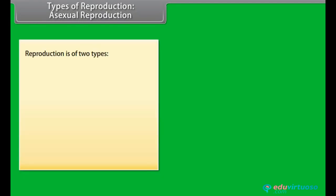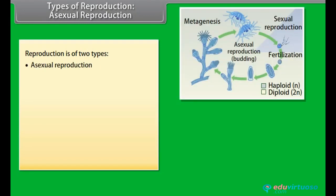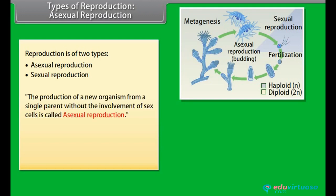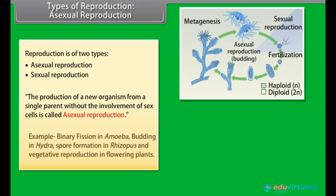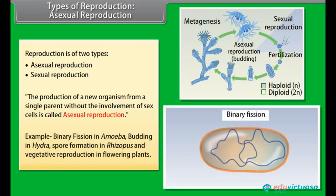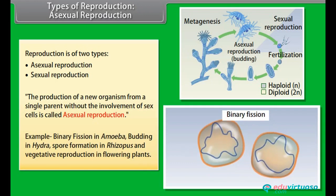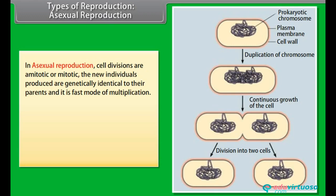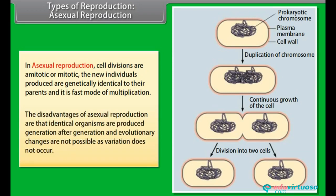Reproduction is of two types: asexual reproduction and sexual reproduction. The production of a new organism from a single parent without the involvement of sex cells is called asexual reproduction. Examples include binary fission in amoeba, budding in hydra, spore formation in rhizopus, and vegetative reproduction in flowering plants. In asexual reproduction, cell divisions are amitotic or mitotic, and the new individuals produced are genetically identical to their parents. It is a fast mode of multiplication. A disadvantage is that identical organisms are produced generation after generation, and evolutionary changes are not possible as variation does not occur.